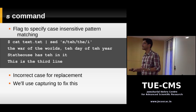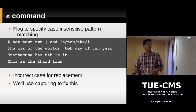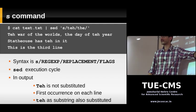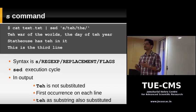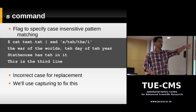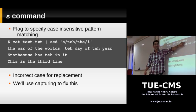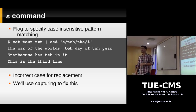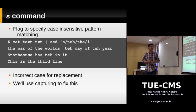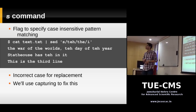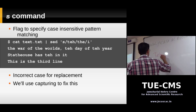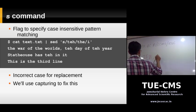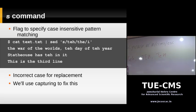For case sensitivity, it's simple — we turn off case sensitivity using the 'i' flag. The S command takes flags that modify how it works. Adding 'i' means case-insensitive matching for the regular expression, so 'teh' will match 'TEH', 'Teh', 'tEh', or any case combination.